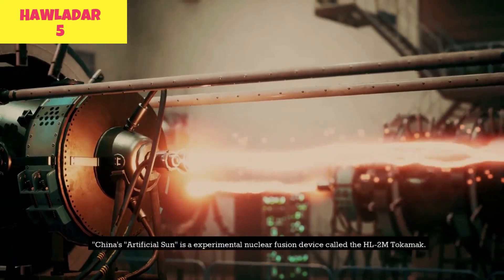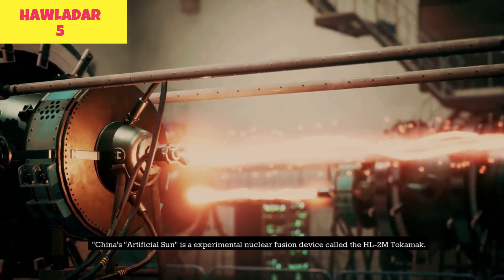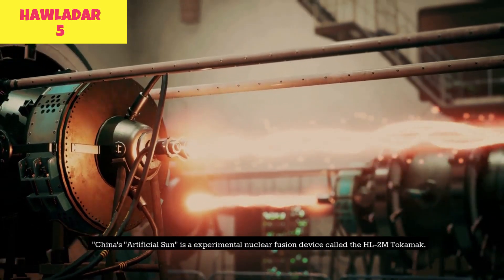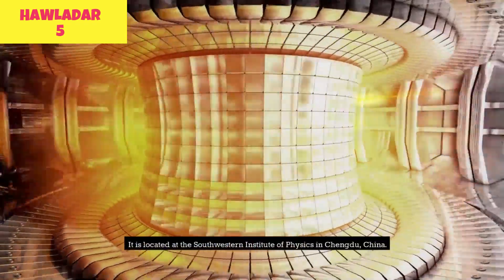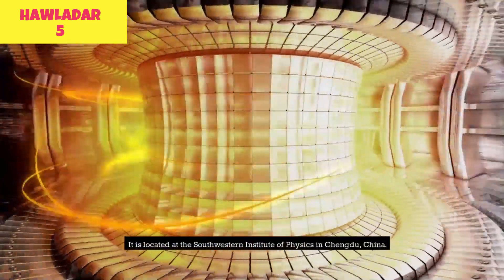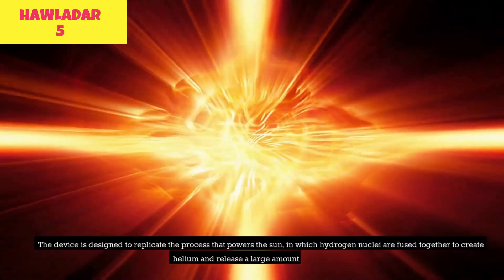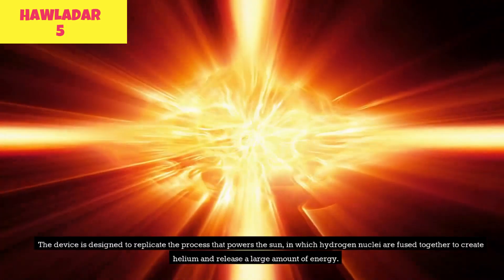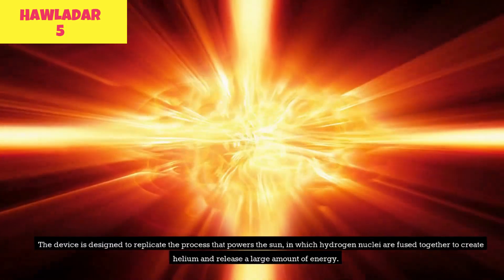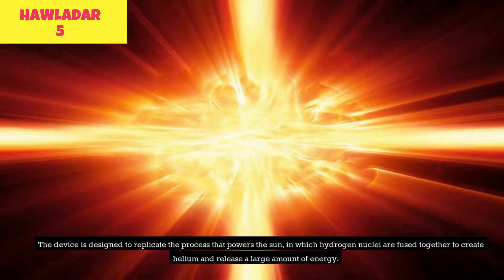China's Artificial Sun is an experimental nuclear fusion device called the HL2M tokamak. It is located at the Southwestern Institute of Physics in Chengdu, China. The device is designed to replicate the process that powers the Sun, in which hydrogen nuclei are fused together to create helium and release a large amount of energy.